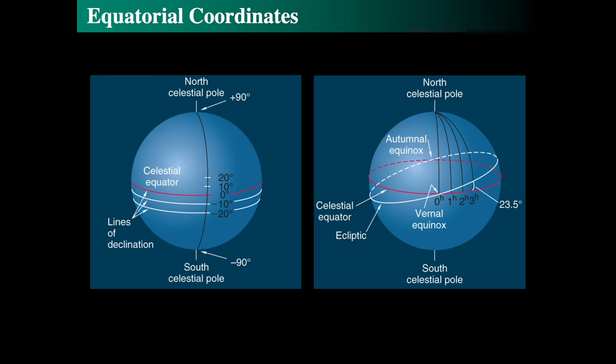Right ascension is measured eastward around the celestial sphere. Once again, declination is an angle north or south of the celestial equator towards the poles. And all objects in the sky can be given in terms of these two coordinates. And this is a map on the celestial sphere, which is fixed with respect to the stars.